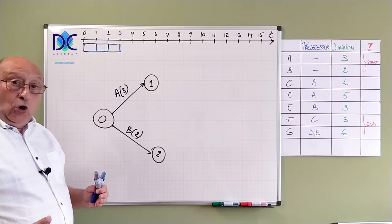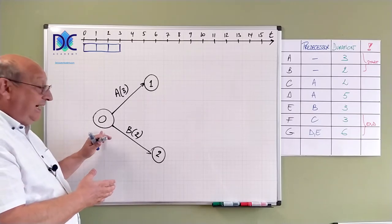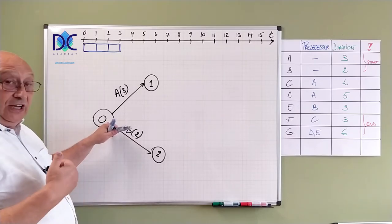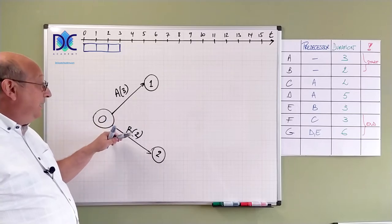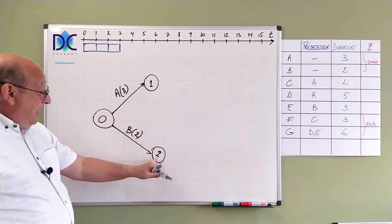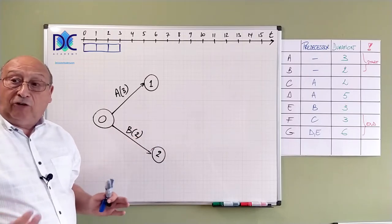Every node is the beginning of one activity and the end of another one. So zero is the beginning point of A and B. Node one is the end point of A. Node two is the end point of B.